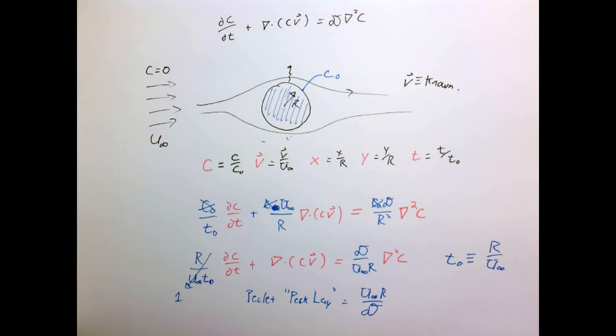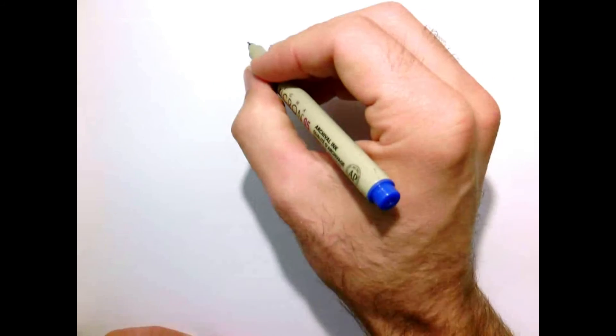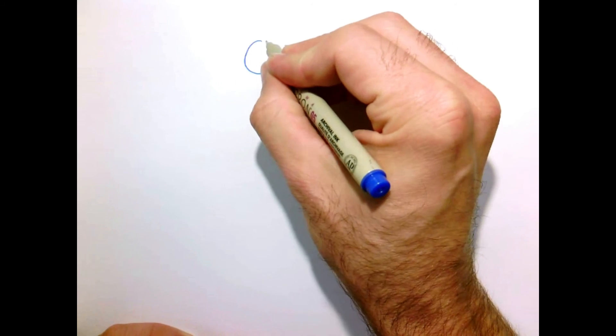The Peclet number characterizes the strength of diffusion relative to that of convection. It's unitless because the diffusivity has units of length squared over time, velocity has units of length over time, and the radius has units of length. The Peclet number is a dimensionless number that gives us the relative strength of convection and diffusion. When the Peclet number is large, we're convection dominated. When the Peclet number is small, we're diffusion dominated.